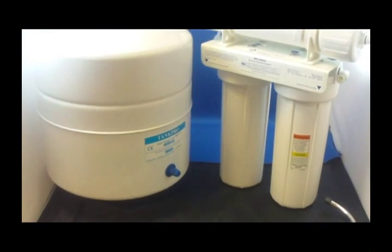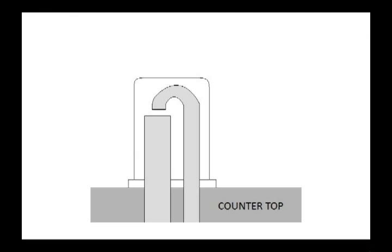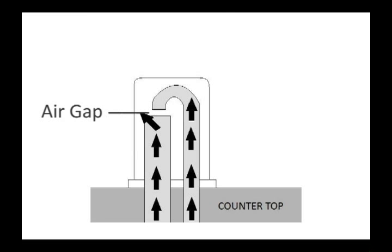Air gap faucets are used with under sink reverse osmosis units. The purpose of an air gap faucet is to provide an air gap for the unit's drain system. In other words, it makes sure water cannot flow backward from the household drain system into the RO unit.